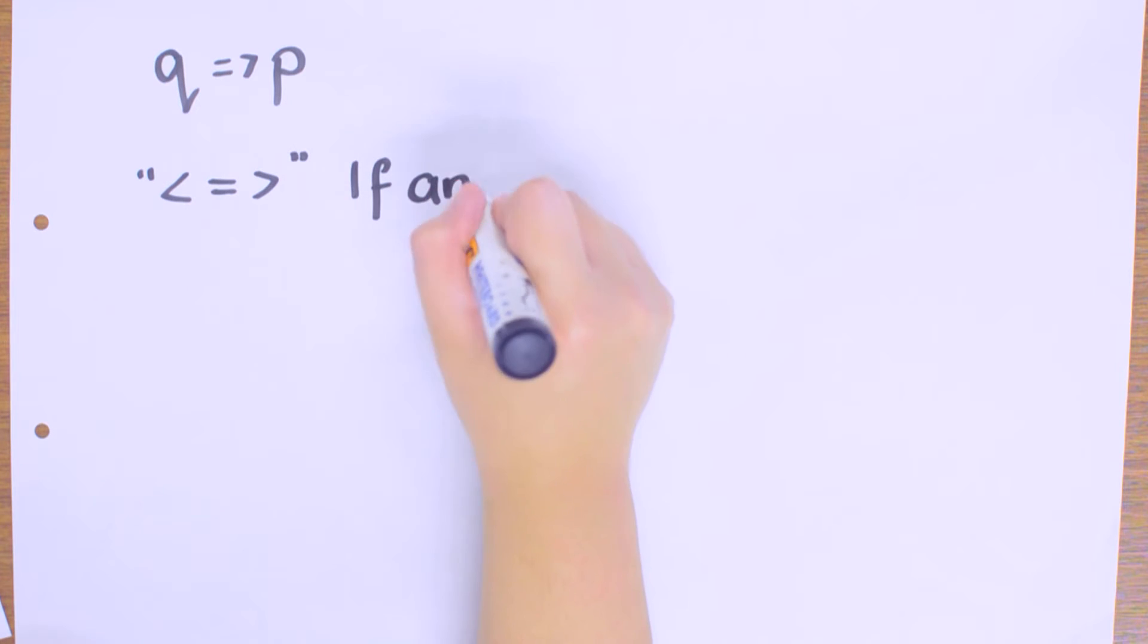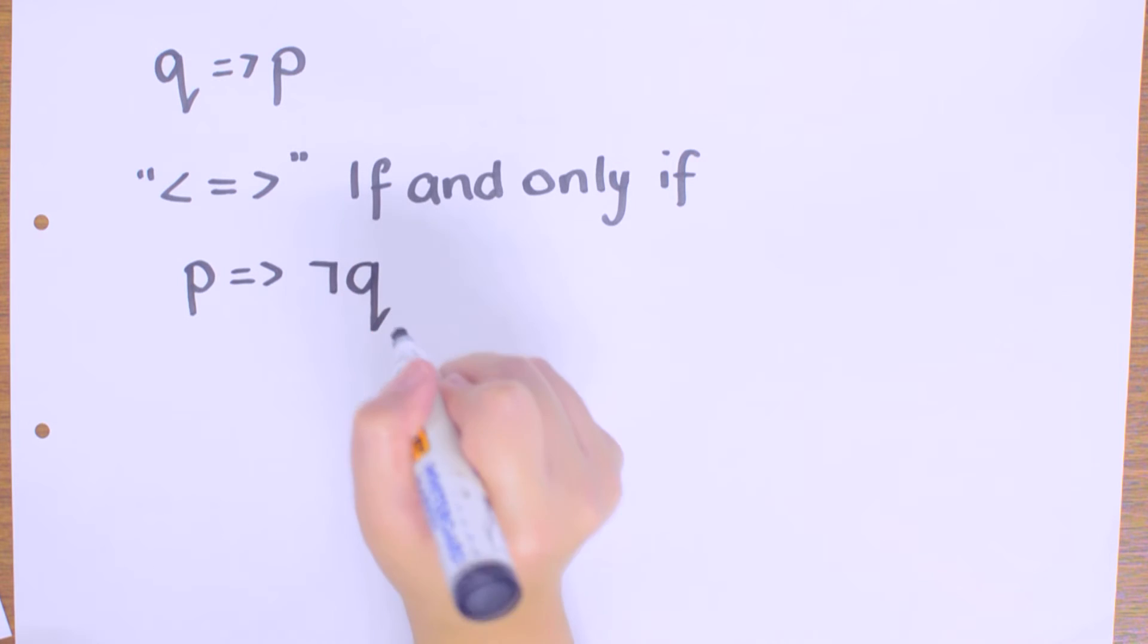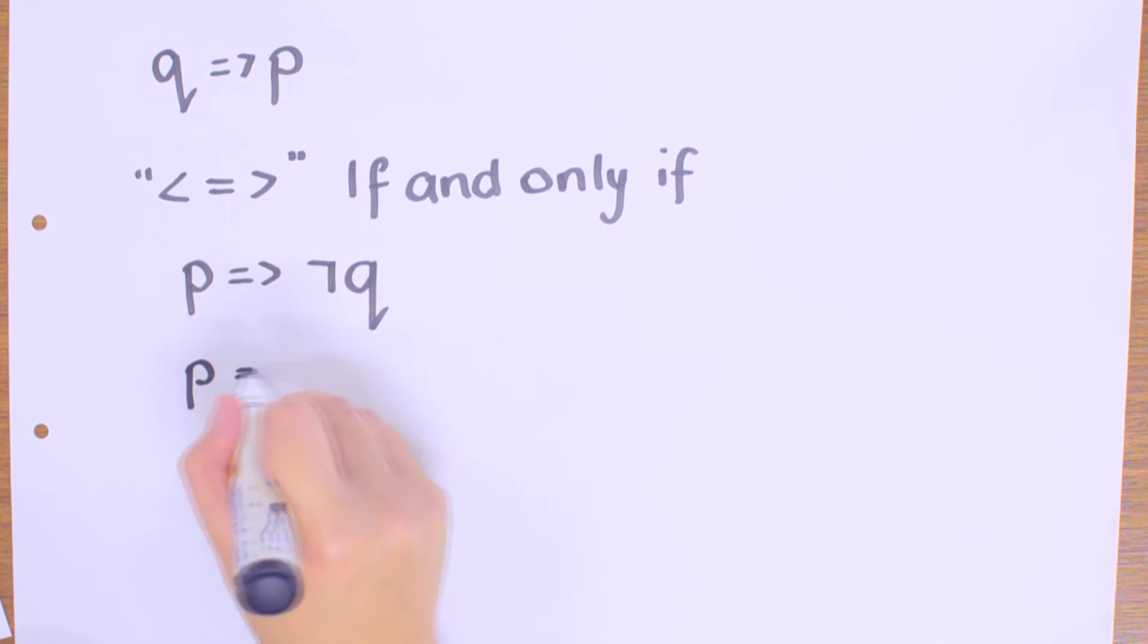When it does hold, it's called an 'if and only if'. Now consider P implies not Q. Is this true? Is it true that if I drive, I don't have a driving license? Actually, we know for sure that this is false.